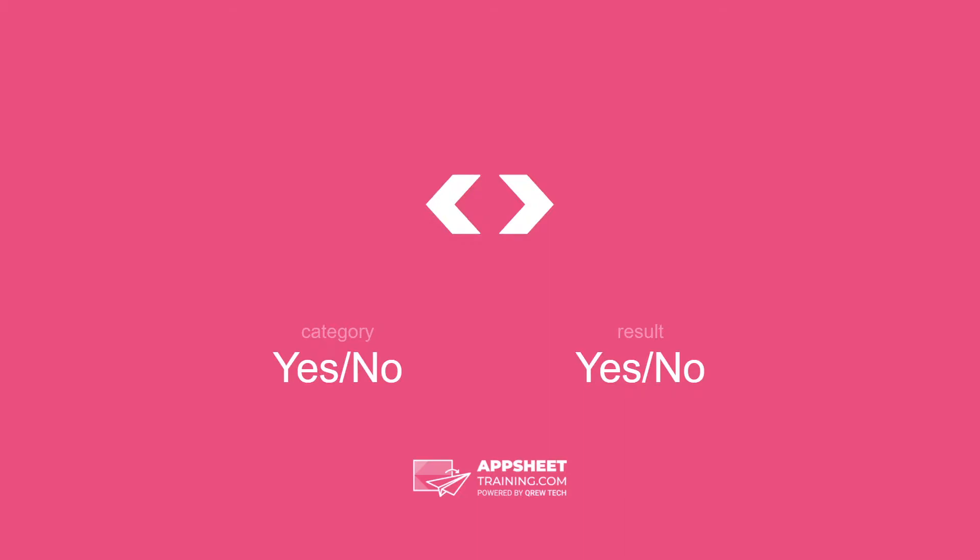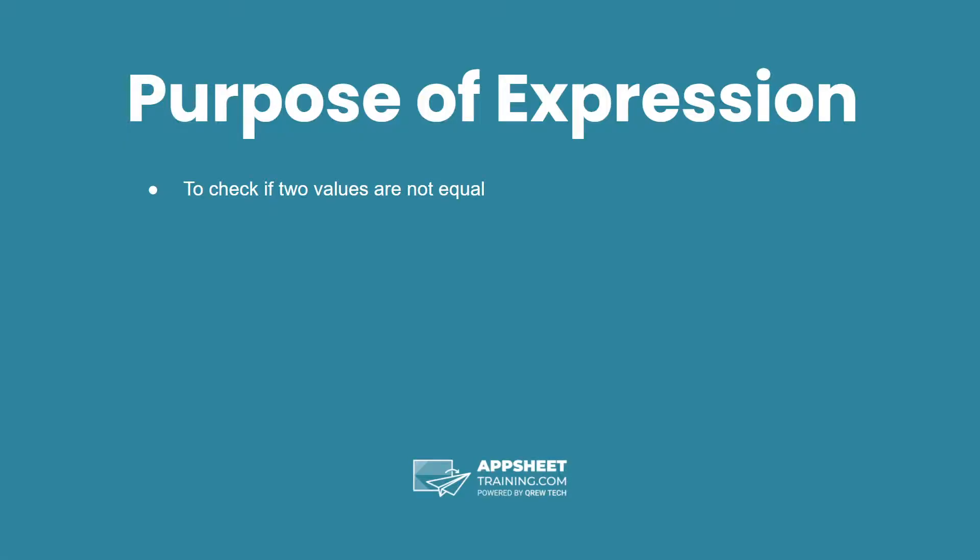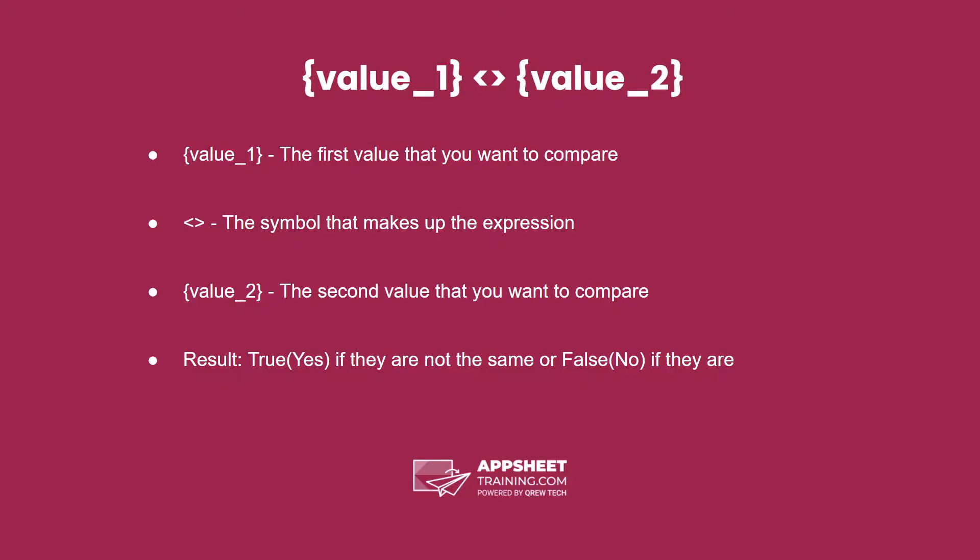The not equal to expression is in the category yes, no, and results in a yes or no value. The purpose of this expression is to check if two values are not equal. The syntax is as follows.